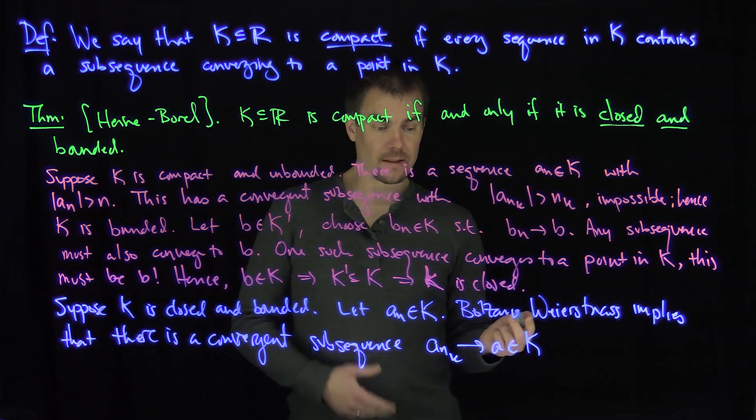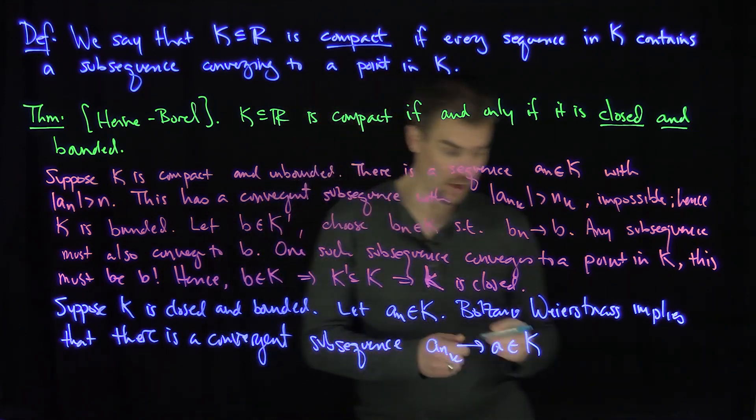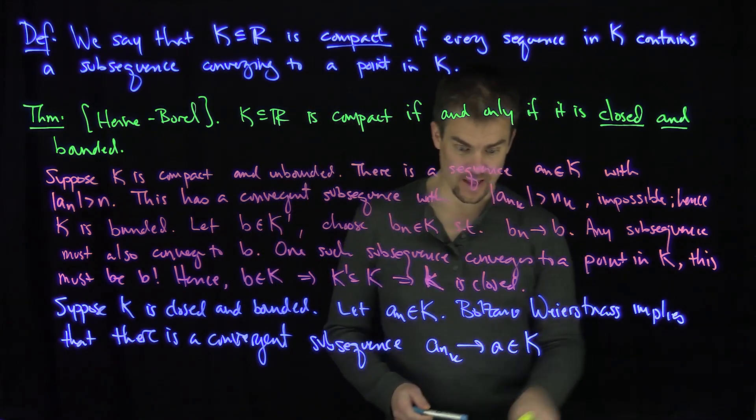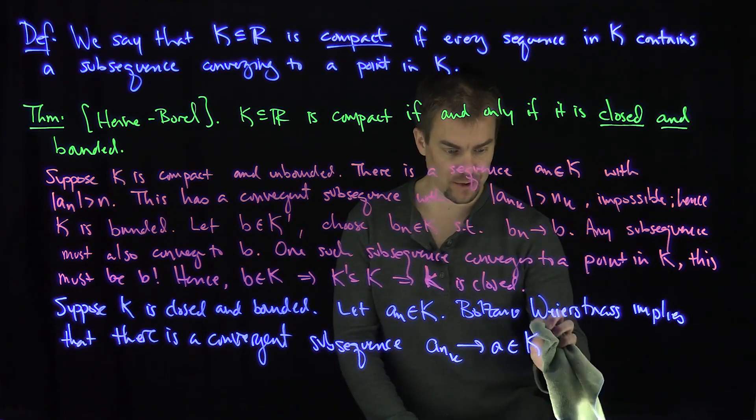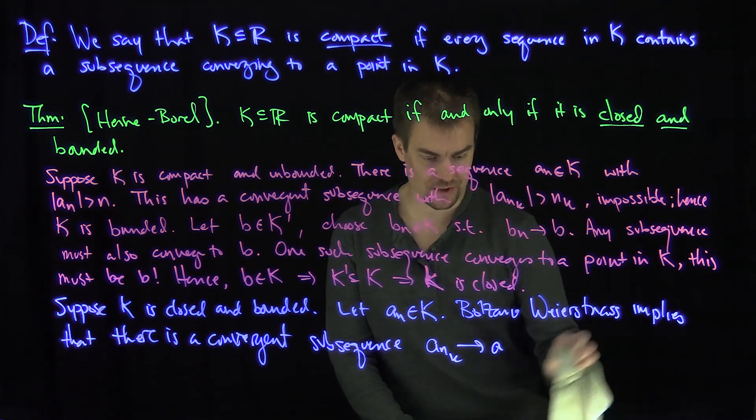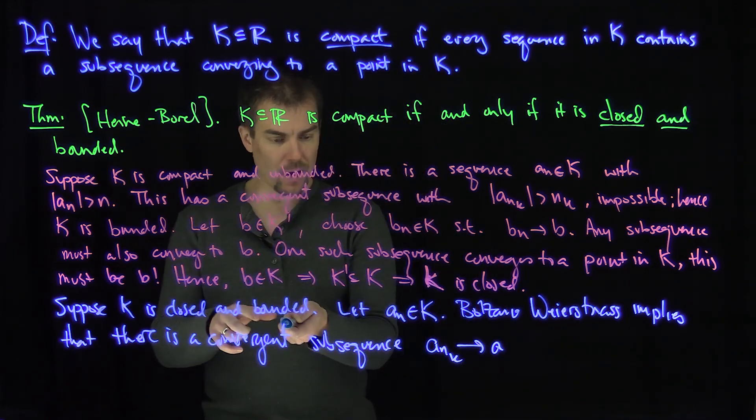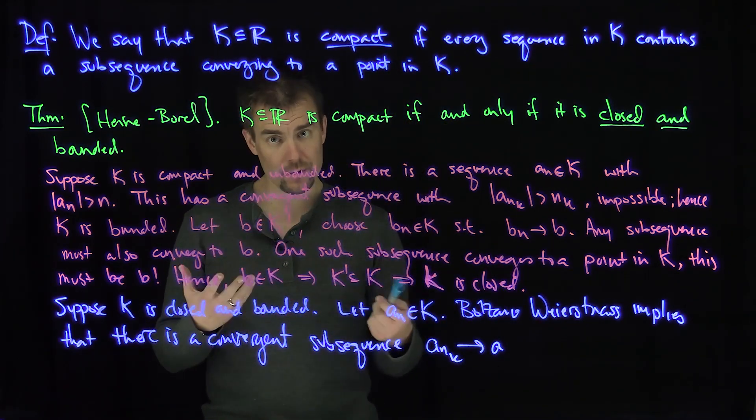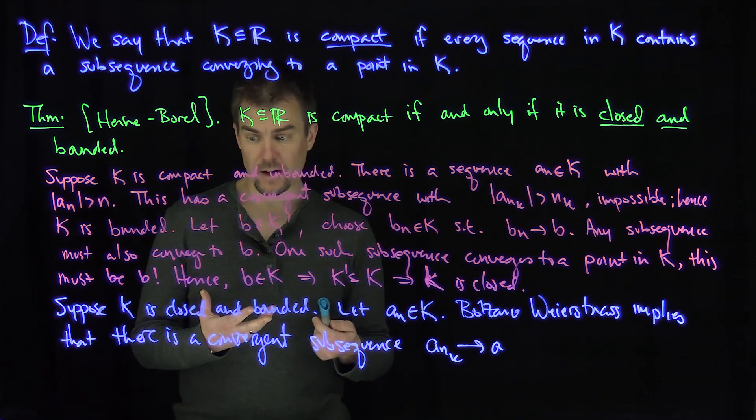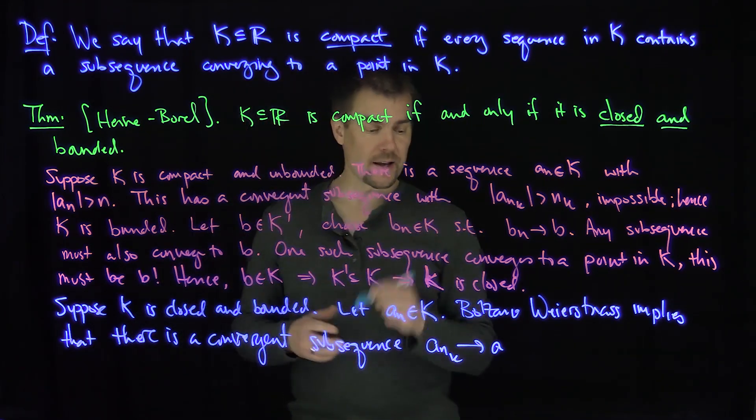Now what do we know? So I'd like to conclude that a is in k, then we'd be done, right? So Bolzano-Weierstrass just says there's the convergent subsequence. We don't know it's in k just yet. So the sequence is in a bounded set, so there's a convergent subsequence by Bolzano-Weierstrass. I'd like to show that that point is in k.